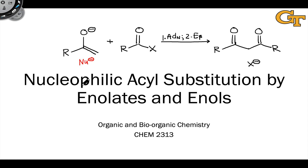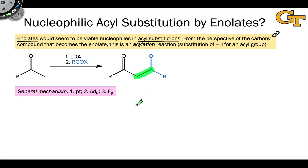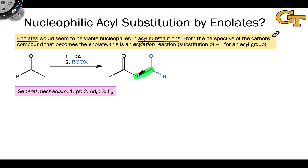Let's begin by thinking about nucleophilic acyl substitution in which an enolate acts as the substituting nucleophile. In theory, a neutral enol could also react as a nucleophile, though examples involving enols are much more rare. Enolates seem like a great candidate for a nucleophile because this would result in the formation of a new carbon-carbon bond in the products, giving us a highly useful product in which we have an alpha carbon between two carbonyl groups — a beta-dicarbonyl compound.